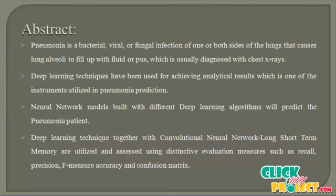Neural network models built with different deep learning algorithms will predict the pneumonia patient. The process uses an iterated function system under multi-layer fractional order machine learning classifiers to rapidly screen the possible classes of pneumonia within regions of interest on CXR images and improve screening accuracy.